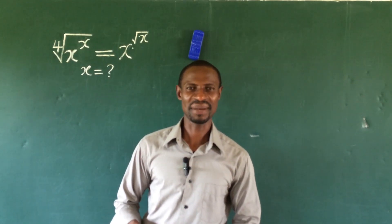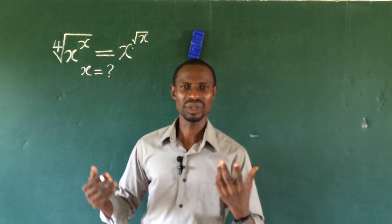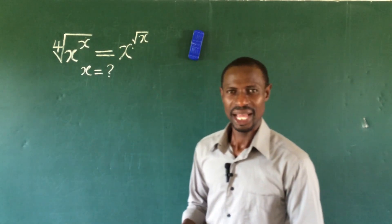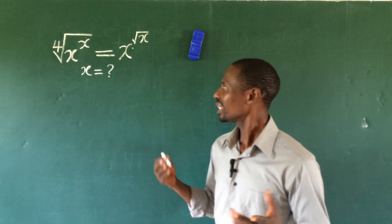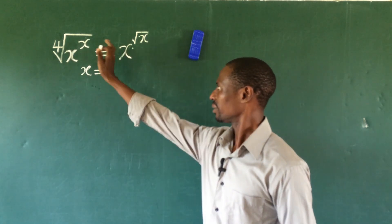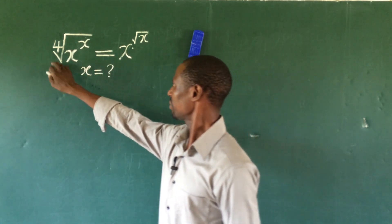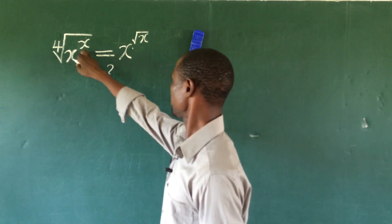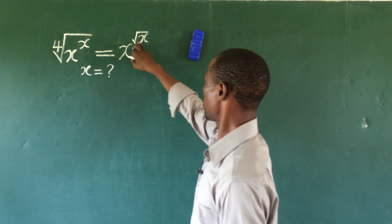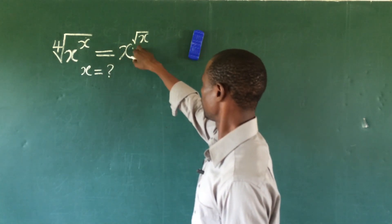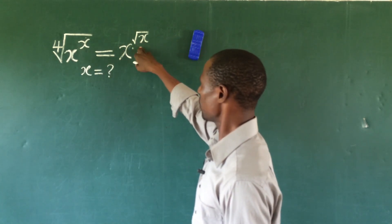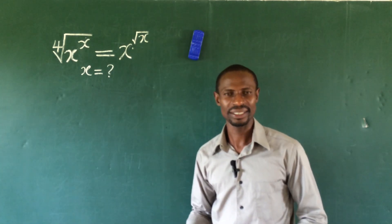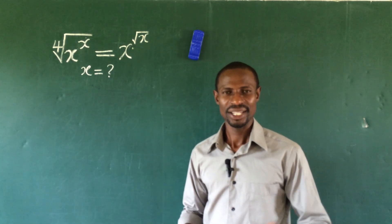Hey, welcome to OnlineMouseTV. Let's quickly examine this simple exponential equation together. We have the fourth root of x to the power of x, equal to x to the power of the square root of x. What will be the value of x?